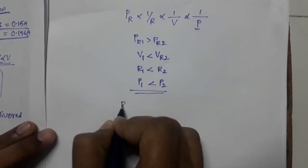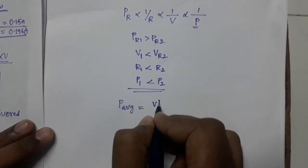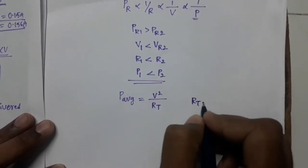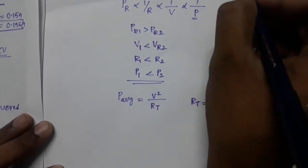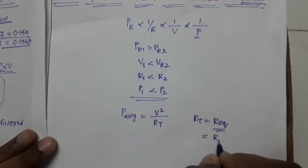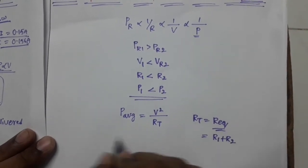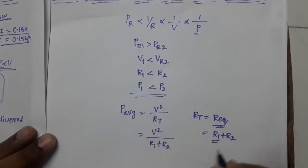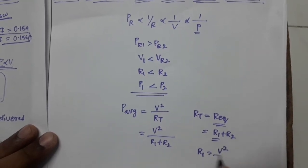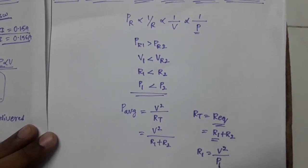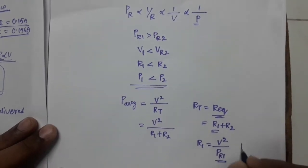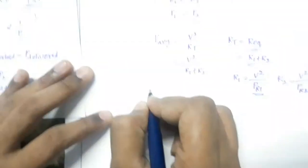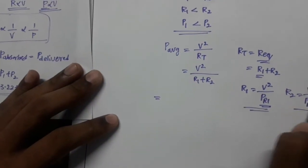P average equals V² divided by Rt. Since they are connected in series, R equivalent equals R1 plus R2. That is equivalent to V² divided by (R1 + R2). We know that R1 = VR² / PR1 and R2 = VR² / PR2. Substituting R1 and R2: V² divided by (V²/PR1 + V²/PR2), taking V² common gives V² divided by V² times (1/PR1 + 1/PR2).